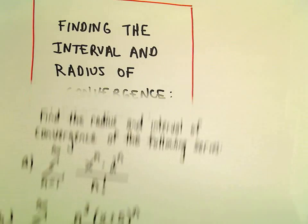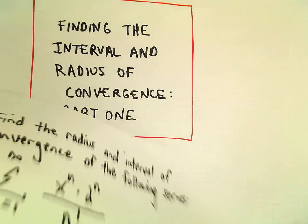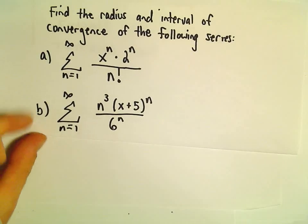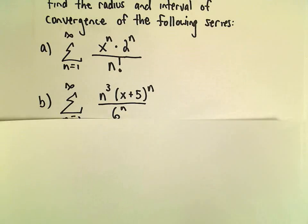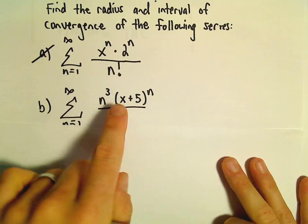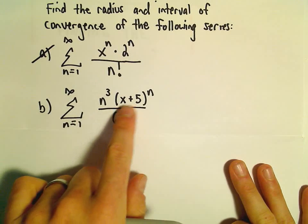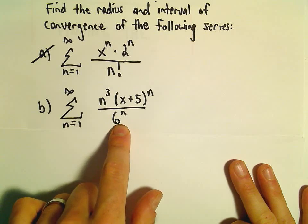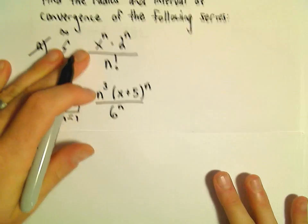Alright, so another example here of finding the interval and radius of convergence. So here we're going to look at part b: n to the third times x plus 5 to the n over 6 to the n.